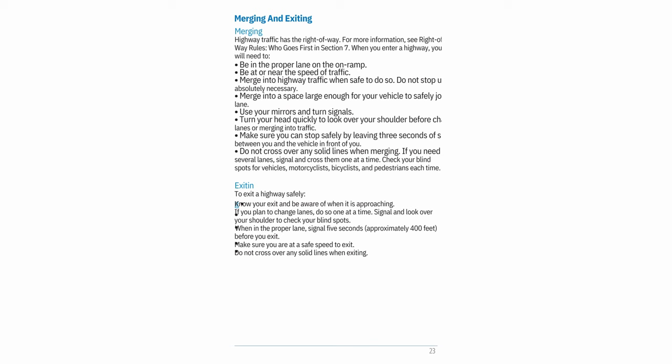Do not cross over any solid lines when merging. If you need to cross several lanes, signal and cross them one at a time — check your blind spots for vehicles, motorcyclists, bicyclists, and pedestrians each time. Exiting: To exit a highway safely, know your exit and be aware of when it is approaching. If you plan to change lanes, do so one at a time. Signal and look over your shoulder to check blind spots. When in the proper lane, signal five seconds (approximately 400 feet) before you exit. Make sure you are at a safe speed — do not cross over any solid lines.